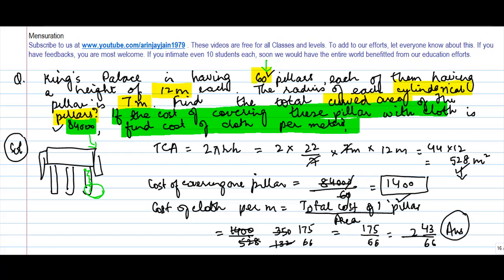The cost is approximately 2 rupees and 80 paisa per meter. Why did we use curved area? Because the area at the top and bottom of the pillar cannot be covered with cloth. The cloth is only wrapped around the curved surface, so we calculate the curved area only for our calculations.